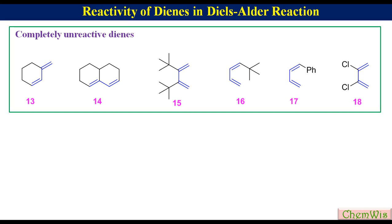Compounds 15, 16, and 17 are unreactive because the S-cis conformation is highly destabilized due to strong steric repulsion. Compound 18 is unreactive because of the electron-withdrawing nature of chlorine and also destabilization of the S-cis conformation due to steric hindrance.